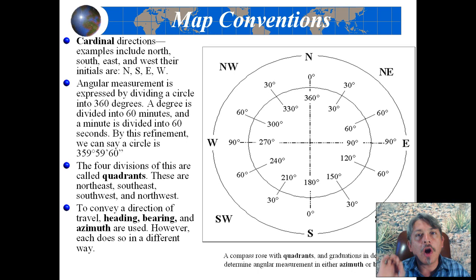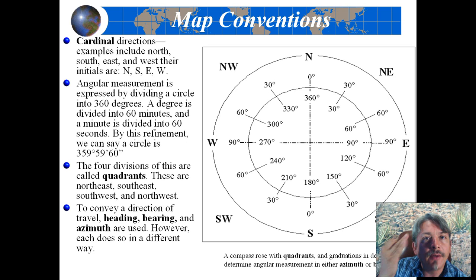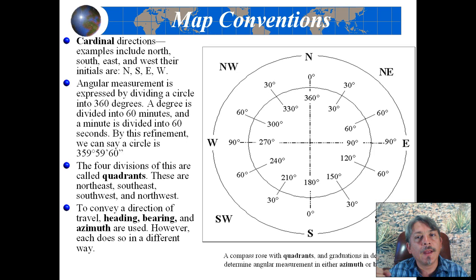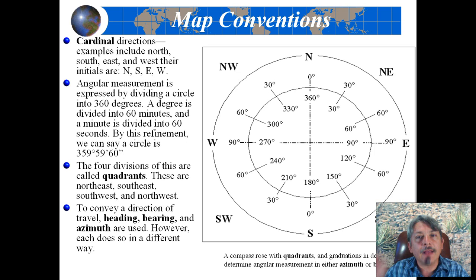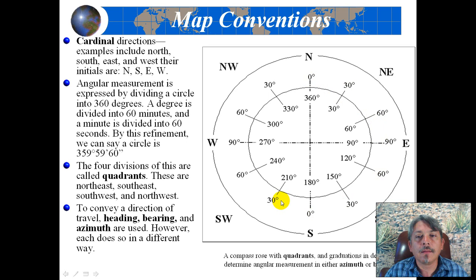Map conventions include the cardinal directions — north, south, east, and west. There are some cultures that invoke them in a required sequence such as north, west, south, and east. They are depicted on a round scale like a protractor — a compass rose — which shows zero running to 360 degrees as an azimuth. They are divided into four quadrants, each being one-fourth of the circle running from zero to 90 degrees. Only north and south can have the zero degree point.